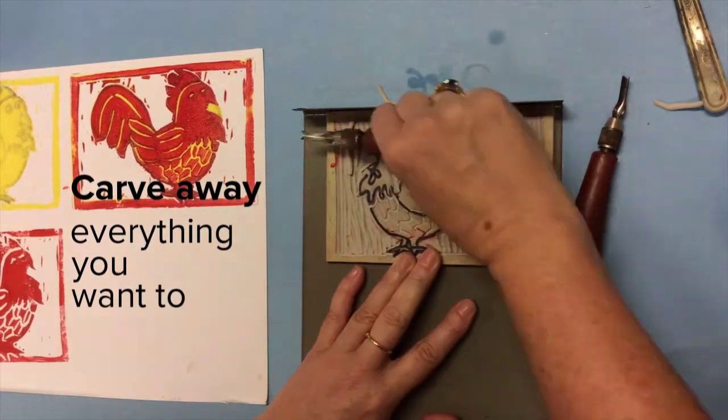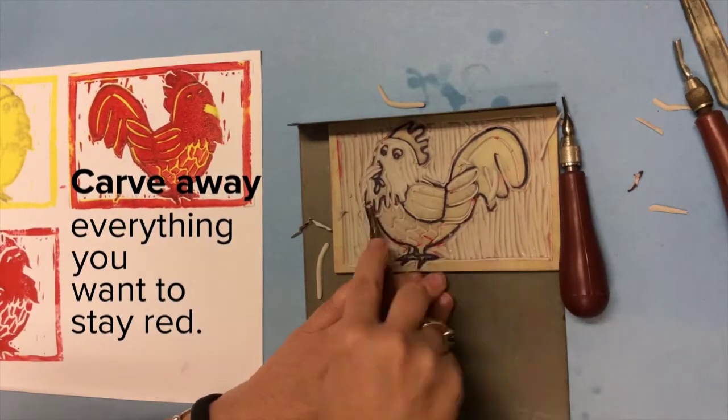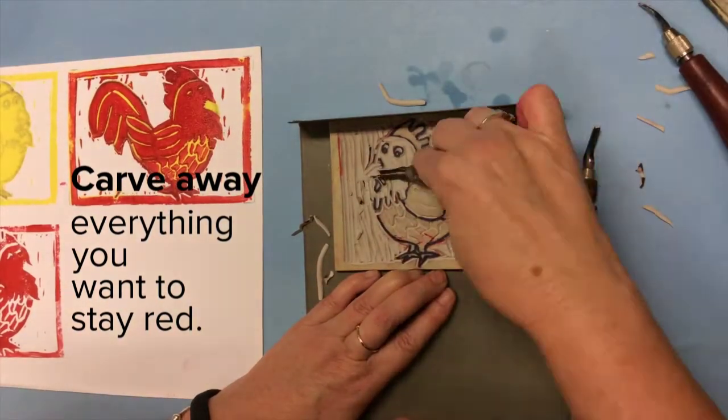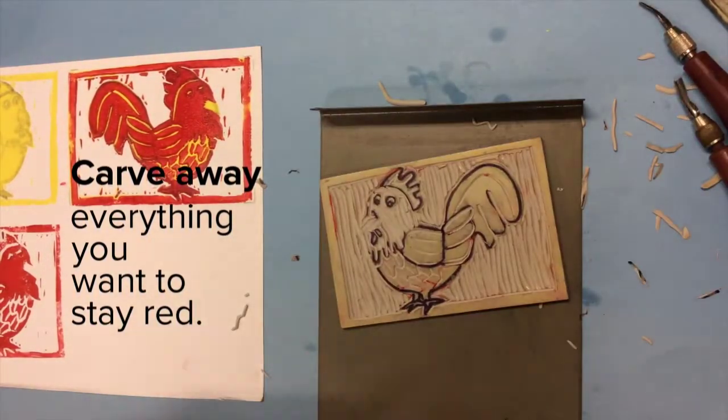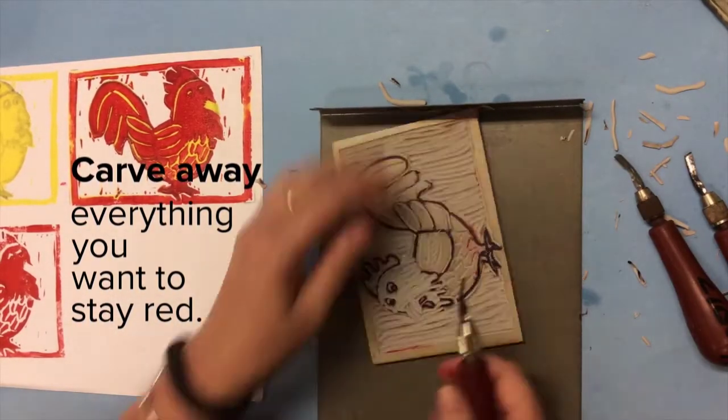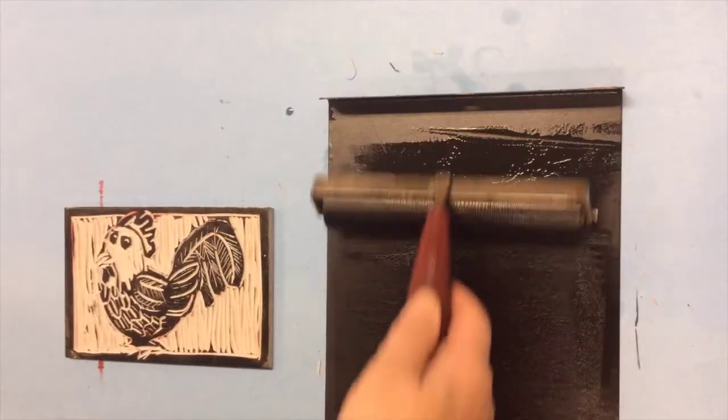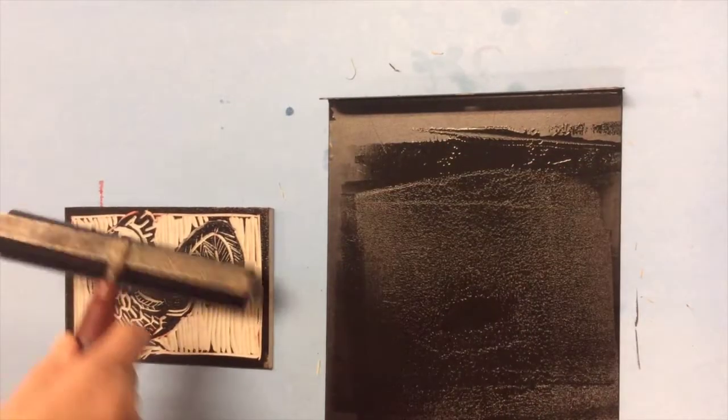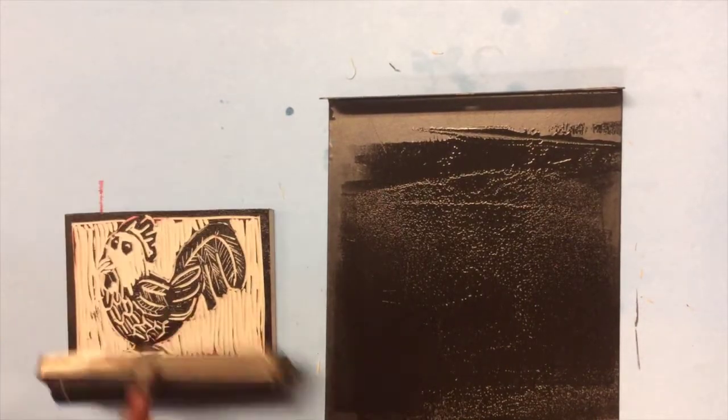Okay now that we've printed the red it's time for the grand finale. I need to carve away everything that I want to stay red. Be really careful. It's easy to get carried away and then have nothing left on your printing block. Alright here we go. Think carefully before you do this. Okay here we go. The last time we're putting ink on our printing block. Again you need to make sure it's nice and even get all the corners get all the edges.